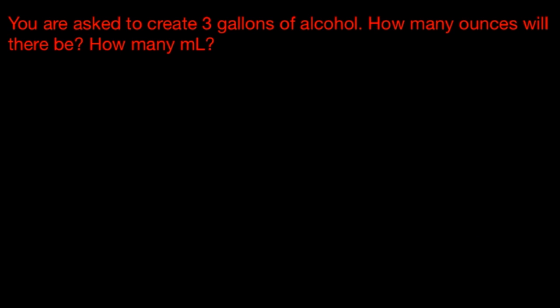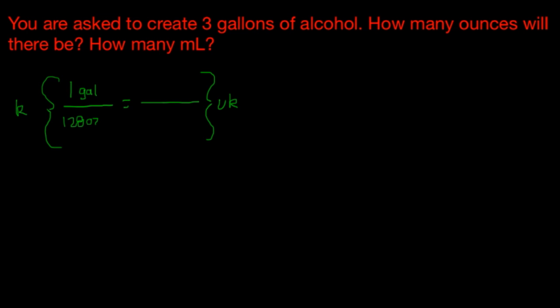The final question is not as hard as that last one. There are two parts to it. The question says: you are asked to create three gallons of alcohol — how many ounces will there be, and how many milliliters? We set up the fraction equals fraction. The question is asking how many ounces, so we need to convert gallons to ounces. One gallon equals 128 ounces. So how many ounces are in three gallons? When we cross multiply and divide, that gives us x equals 384 ounces.